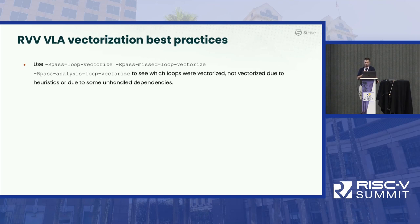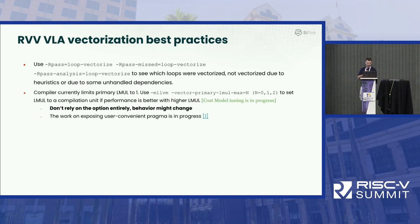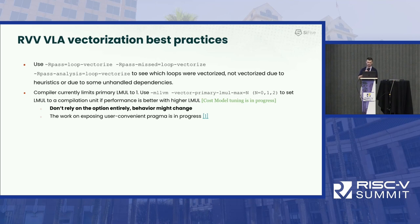Overall, as best practice to get better performance with RVV VLA, there are three options that are always best friends for any developer who wants to understand what happened with a loop. These three options will tell which loops were vectorized, which were not, and why a loop was not vectorized. We also had to limit our selection of the primary LMU to avoid corner cases during this transition to RVV VLA. We prefer to limit it to one, but if you have code that will benefit from higher LMU, there is an option currently provided to increase the LMU selection.